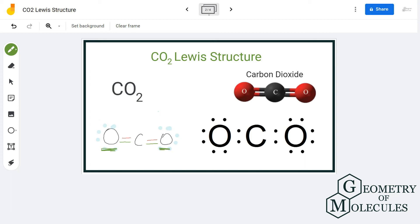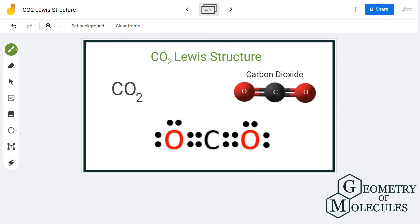So after placing two bonds between carbon and oxygen atom, we see that there are eight electrons in carbon's outer shell and there are eight electrons for oxygen's outer shell as well. So this is the Lewis structure for CO2.